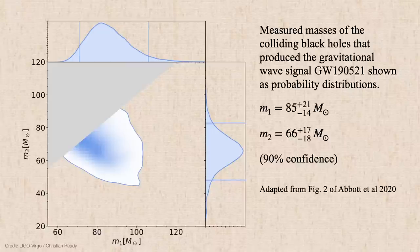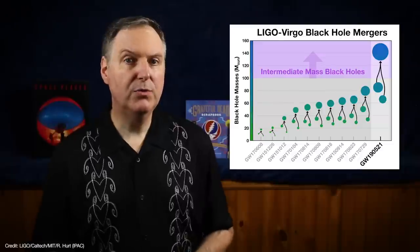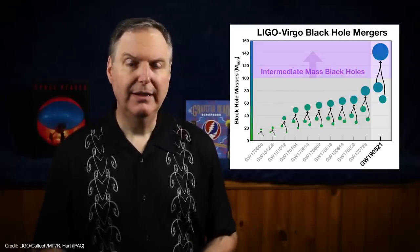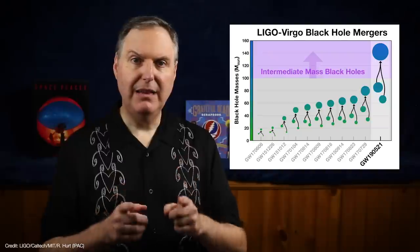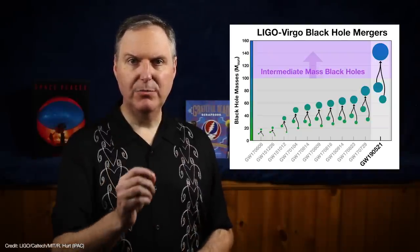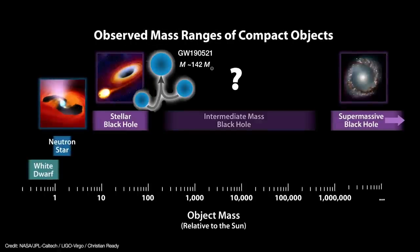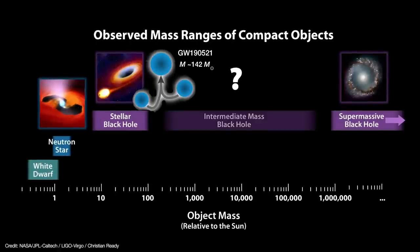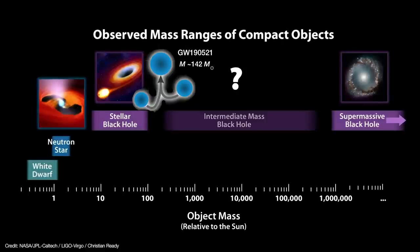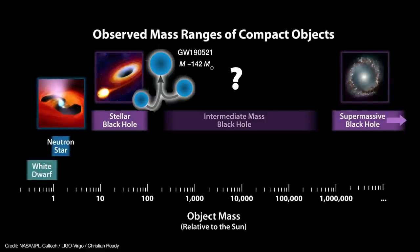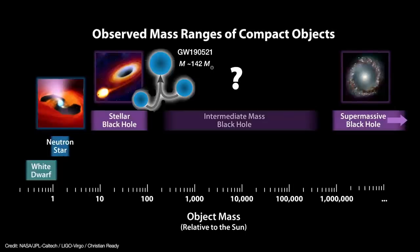The signal, designated GW 2019-0521, wasn't so much a chirp as it was a bang. When the dust settled on all the measurements, the LIGO-VIRGO team calculated that a pair of black holes weighing 85 and 66 solar masses produced a gigantic 142 solar mass black hole. In other words, the team made the first direct detection of an intermediate mass black hole.